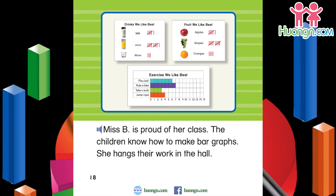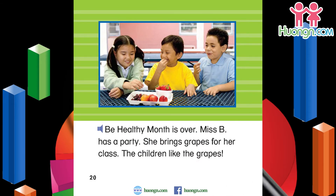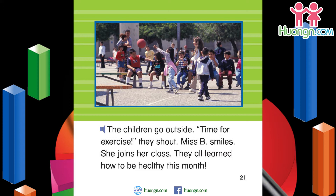Miss B is proud of her class. The children know how to make bar graphs. She hangs their work in the hall. Other classes read the bar graphs and learn what Miss B's class likes best. They want to make bar graphs, too. Be Healthy Month is over. Miss B has a party and brings grapes for her class. The children go outside — time for exercise, they shout. Miss B smiles and joins her class. They all learned how to be healthy this month.